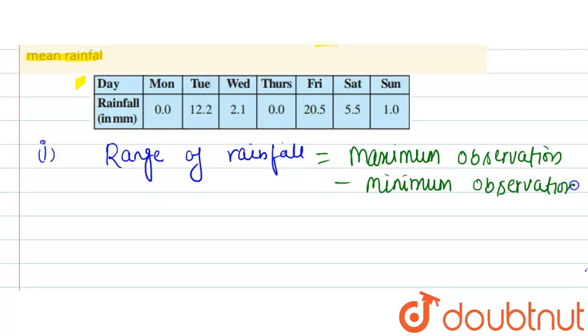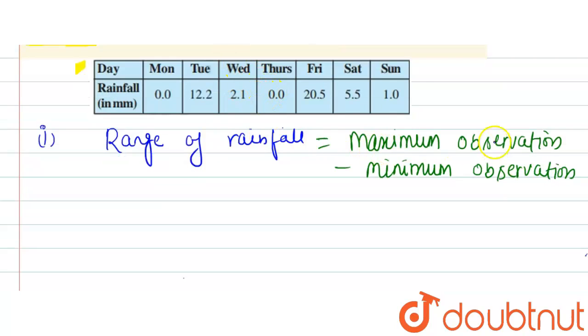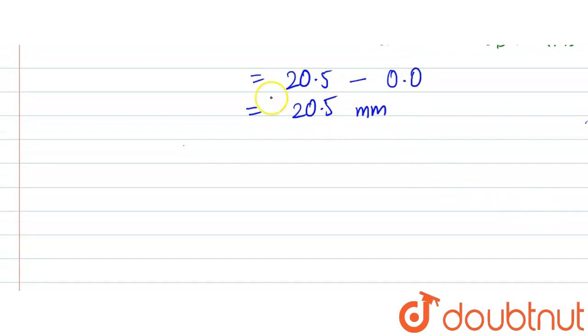Here if we check, the maximum observation is on Friday, that is 20.5, that is our maximum observation. The minimum observation is this and this, that is zero, both are equal. So we will write minimum observation to be 0.0. So that gives us 20.5 minus 0.0, that's 20.5 millimeters. So the range of the rainfall is 20.5.